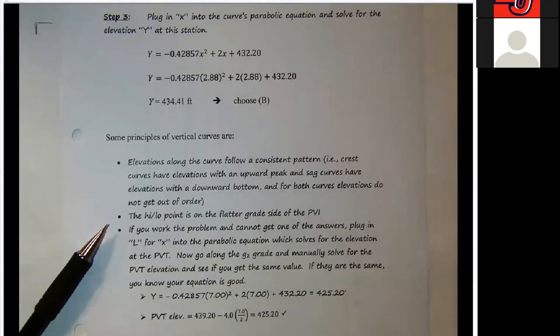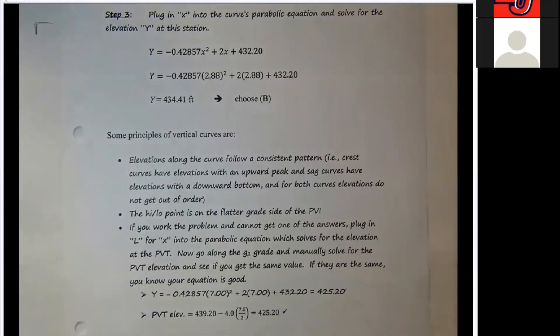If they ask you something about the high point of the curve, and you calculate information about it, and you get a station that is not to the left of the PVI in our example, something's wrong, and you got to go back and redo that.